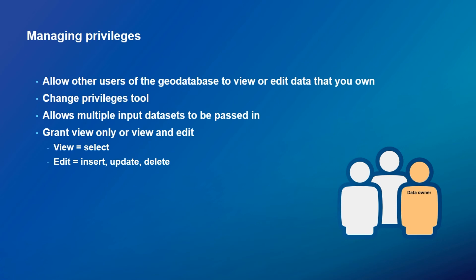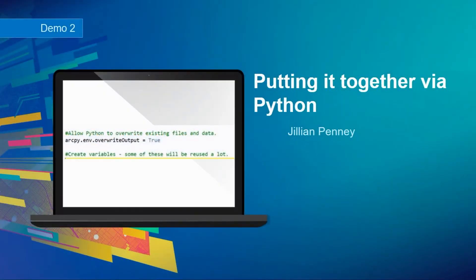When you get view privilege, you can select the contents of the data. When you get edit, you can insert, update, or delete contents of that data. You must be connected as the data owner to grant these privileges to other users. Now back to Jill for a comprehensive demo of these two administrative roles.